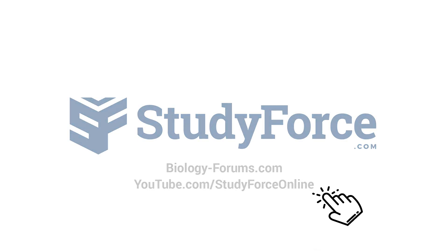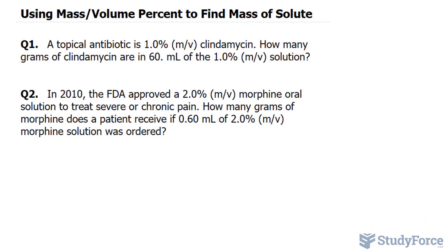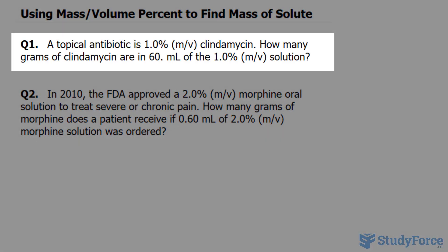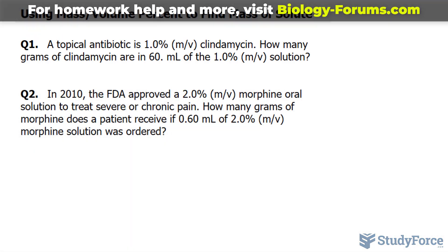In this lesson, I'll show you how to use the mass per volume percent to find the mass of a solute. The question reads: a topical antibiotic is 1.0% mass per volume clindamycin. How many grams of clindamycin are in 60.0 milliliters of the 1.0% mass per volume solution?